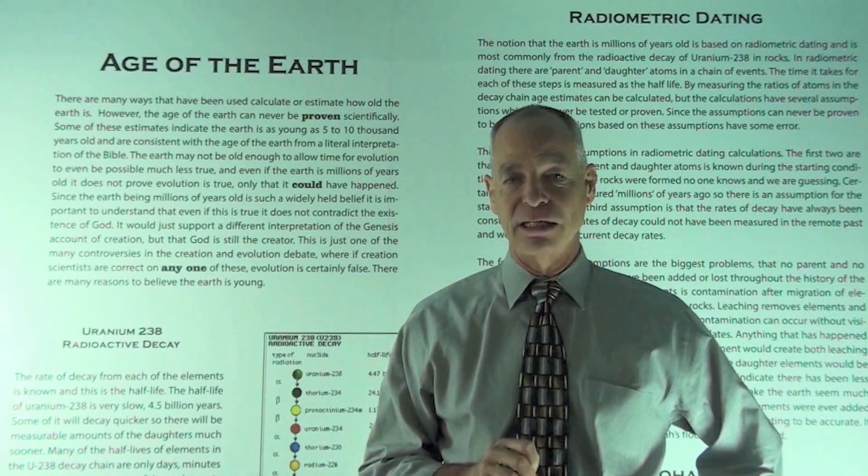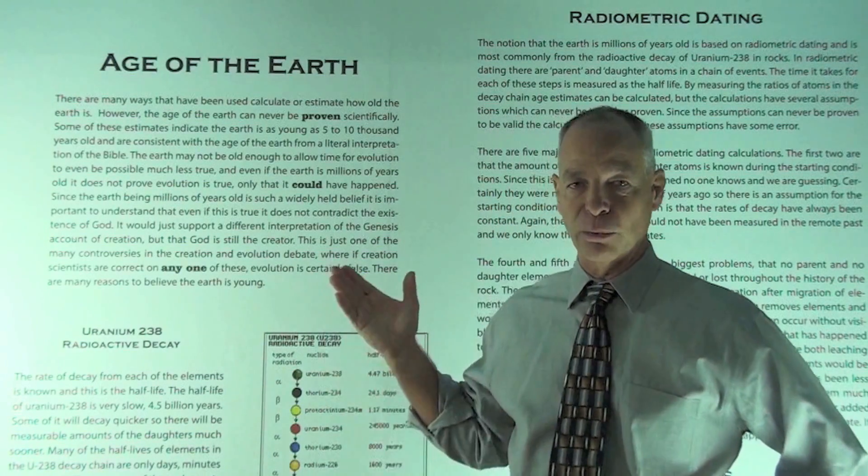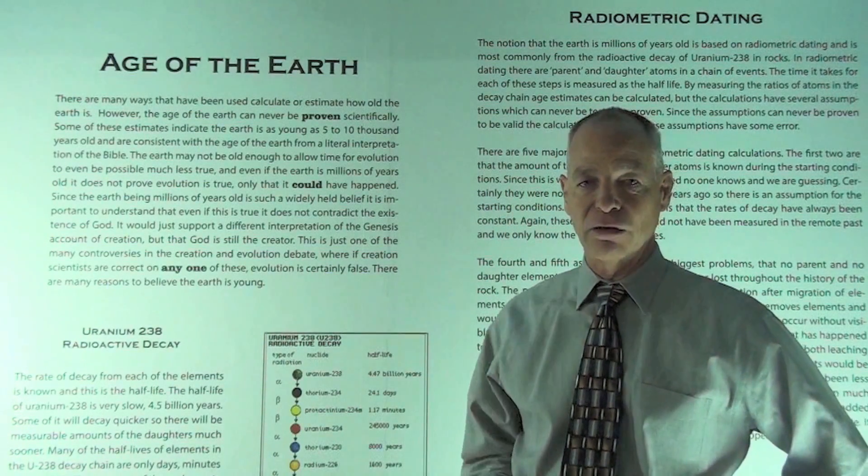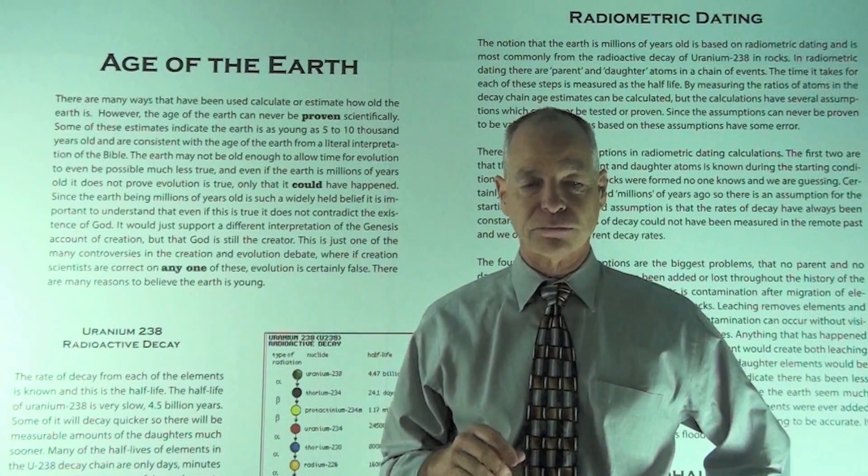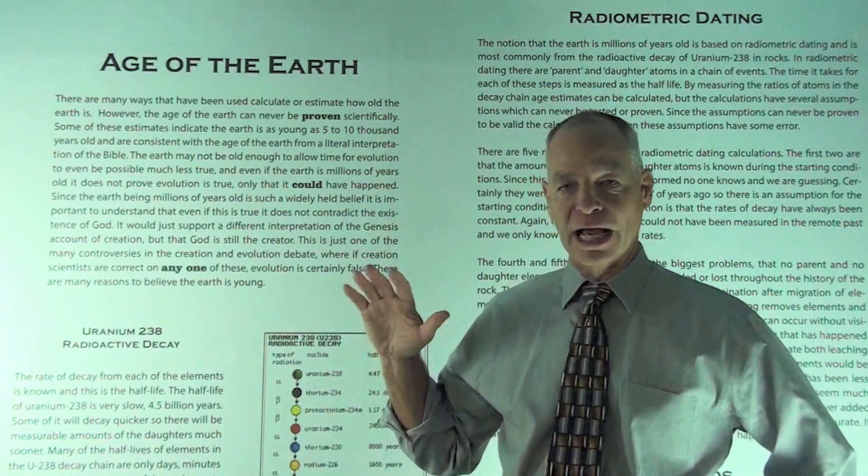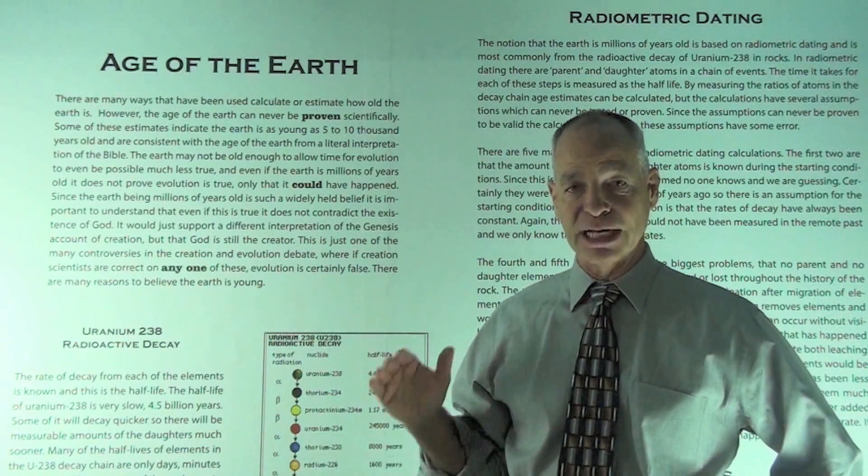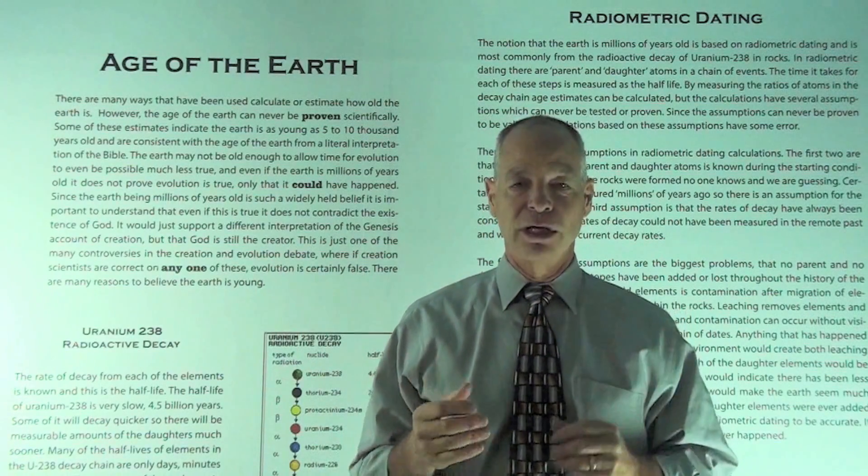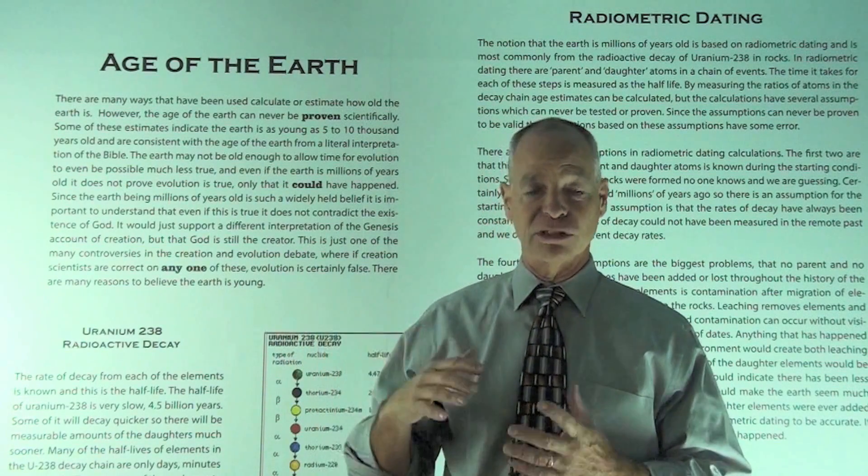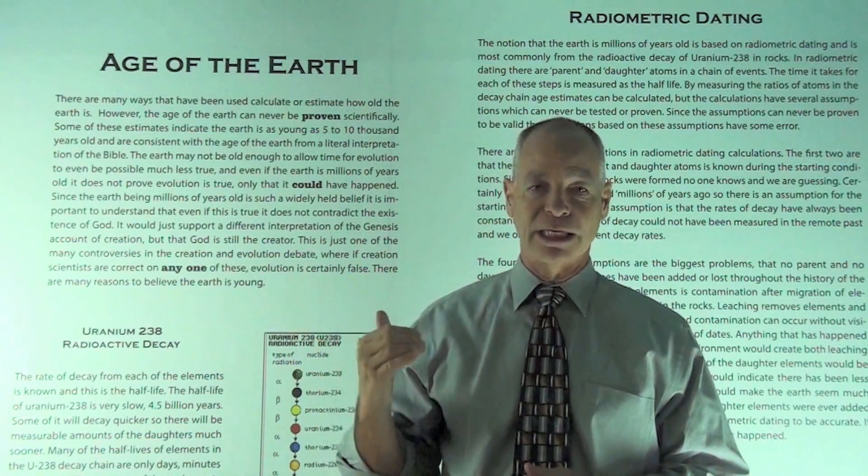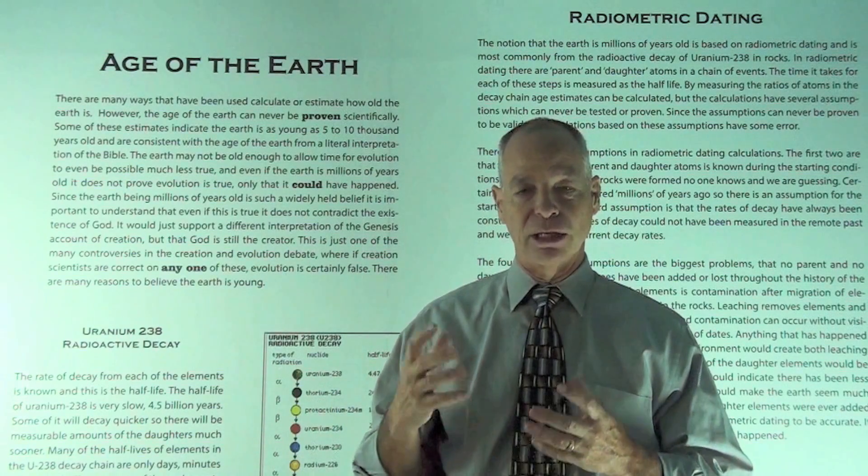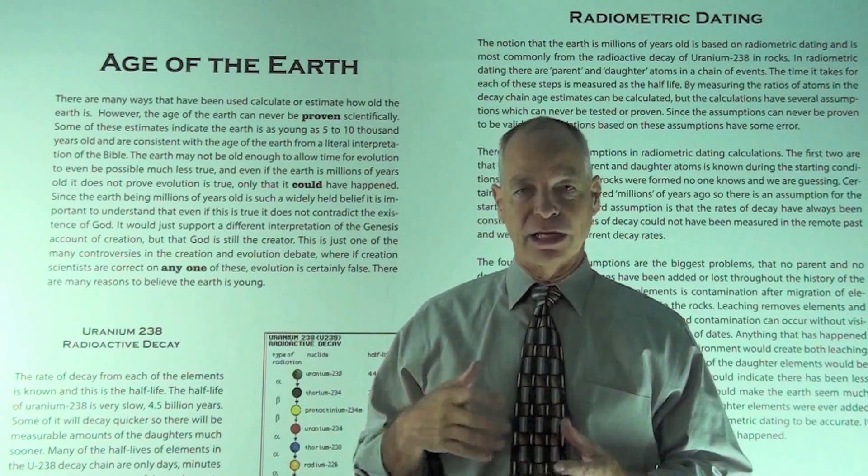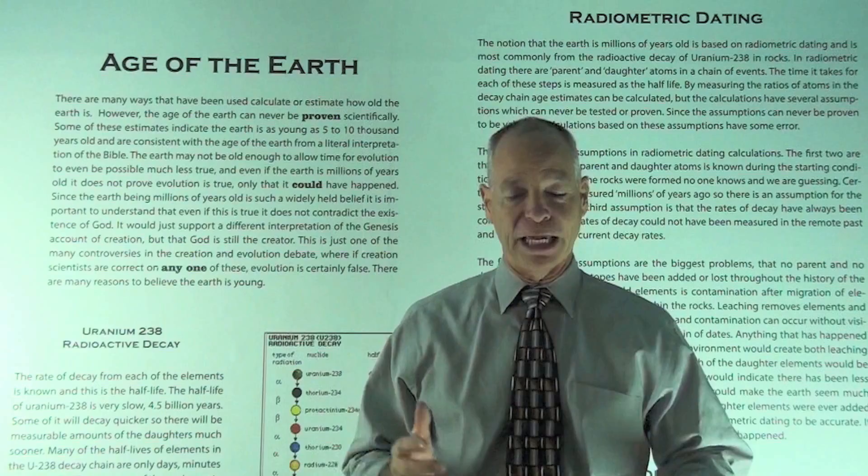Millions of years of dating time is based on the radioactive decay of Uranium-238. And because they know all of these steps and how long these steps make, then they can make calculations based on ratios of the parent. Each time something decays, you have a parent atom that decays into the daughter atom. So by knowing the relative amounts of each, then they can do some calculations to determine age.